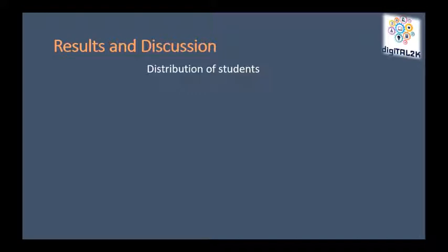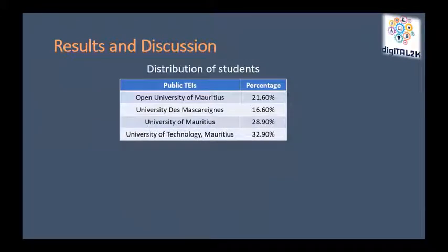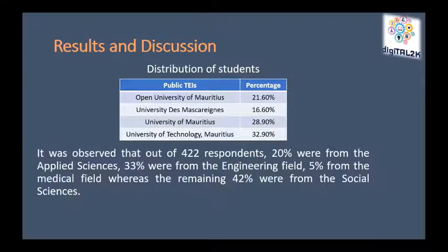The distribution of students covered four TEIs in Mauritius, with response rates of 21.6% from the Open University, 28.9% from the University of Mauritius, and 32.9% from the University of Technology Mauritius. Out of 422 respondents, 20% were from applied sciences, 33% from engineering, 5% from medical field, and the remaining 42% from the social science field.